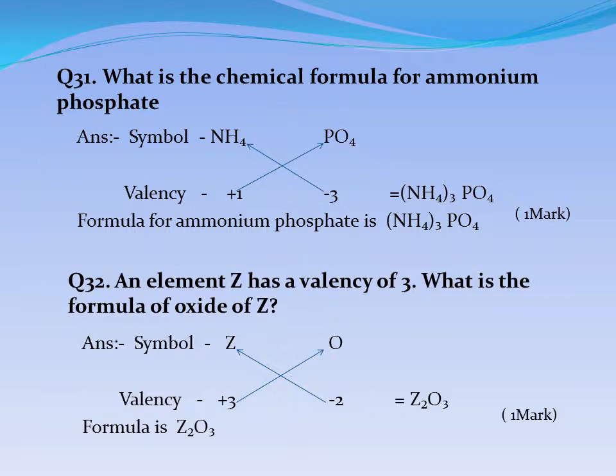Question No. 32: An element Z has a valency of 3. What is the formula of the oxide of Z? Answer: Symbol Z valency positive 3, O valency negative 2. By criss-cross method, the formula is Z2O3.